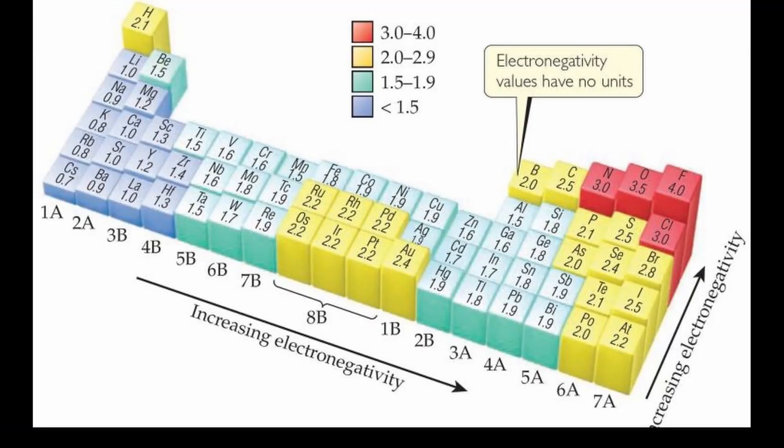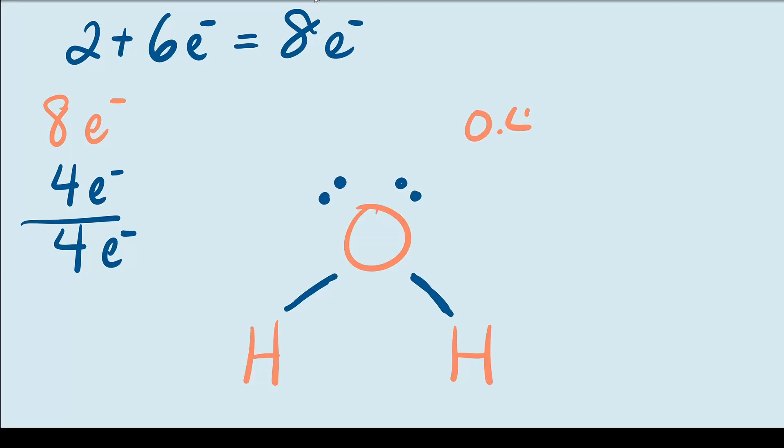We can see that oxygen is 3.5 and hydrogen is 2.1. Since the difference between them is 1.4, this molecule has polar bonds between the oxygen atom and the two hydrogen atoms.